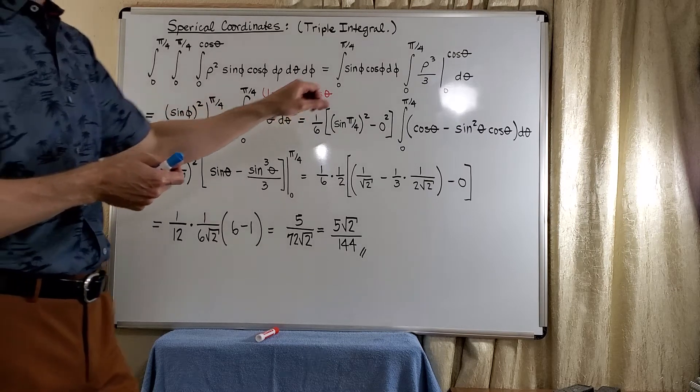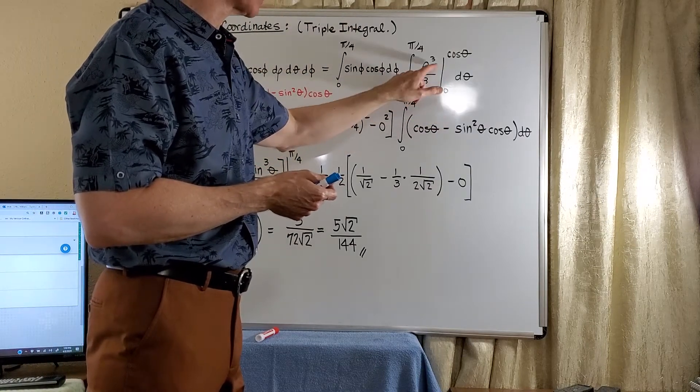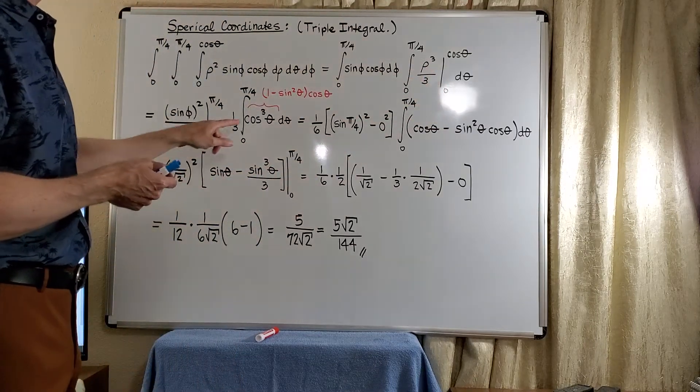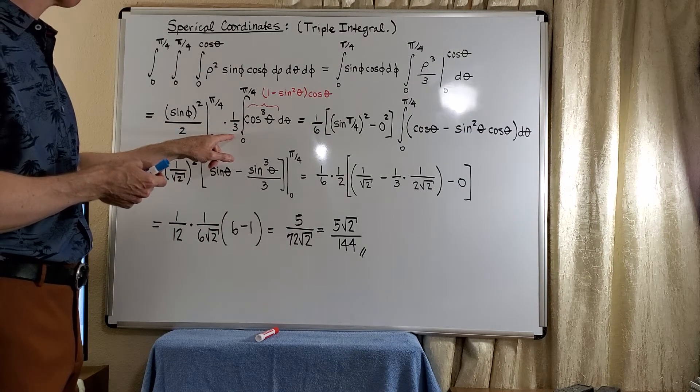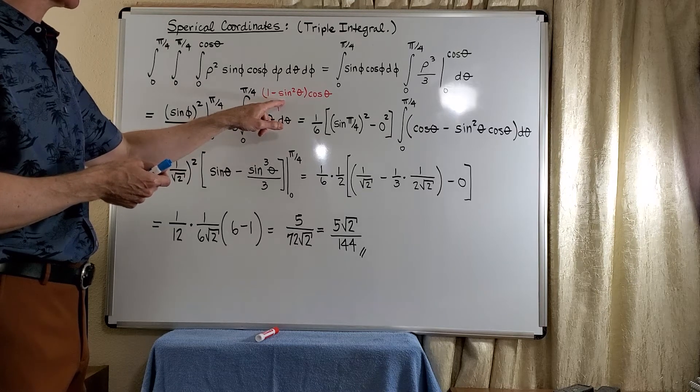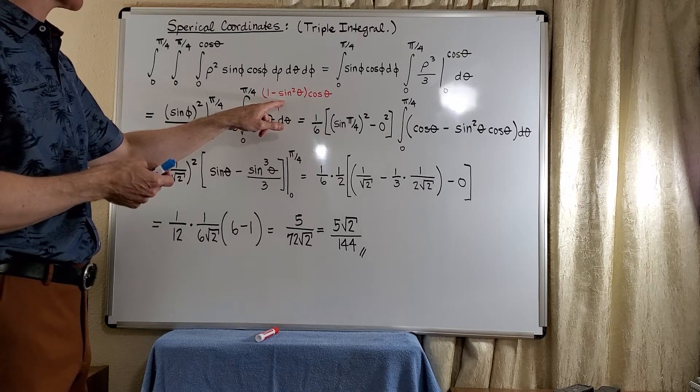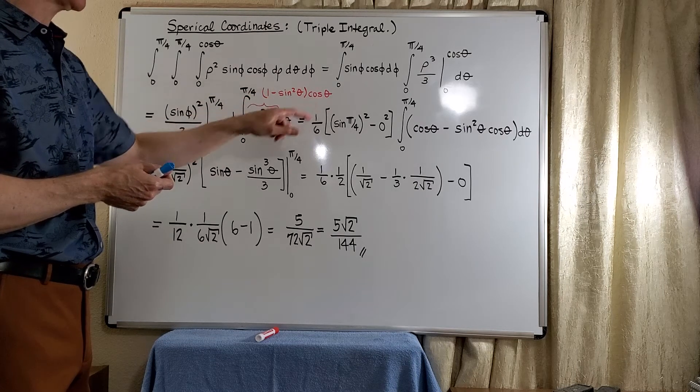Now, when we look at the evaluation here, the lower limit gives us 0, but the upper limit will give us a cosine cubed. Of course, we go ahead and factor the 1 third. And then of course, to integrate the cosine cubed, we just use the fundamental theorem of trigonometry and write cosine squared as 1 minus sine squared with the differential right here.